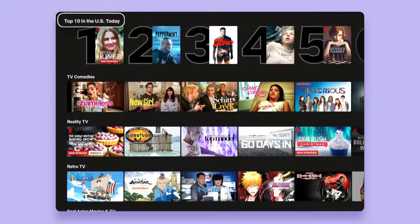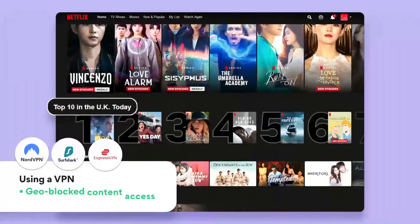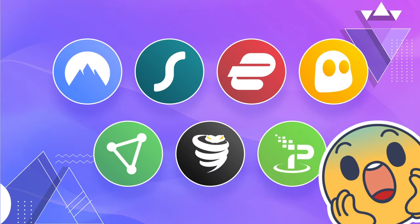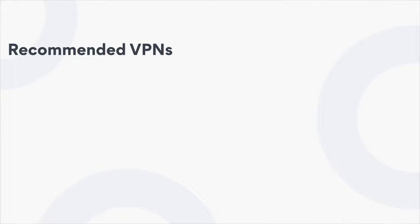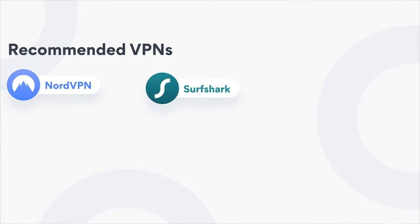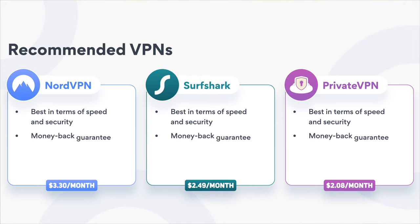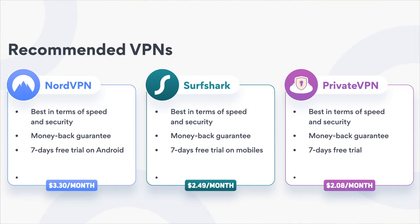With a VPN, you get good protection alongside an IP address change, and you can access geo-blocked content depending on your VPN provider. There are lots of VPNs on the market, and choosing one may be hard for a casual user. I personally recommend taking a look at NordVPN, Surfshark, and PrivateVPN. They are amongst the best in terms of speed and security, and they have a money-back guarantee. Plus, PrivateVPN has a seven-day free trial. Surfshark offers the same free trial for mobiles, and NordVPN on Android. They also unblock Netflix, so if you want to change your IP to watch geo-blocked content, they are a good choice.